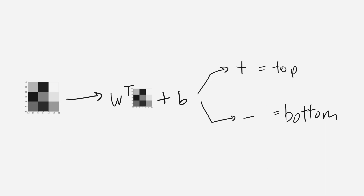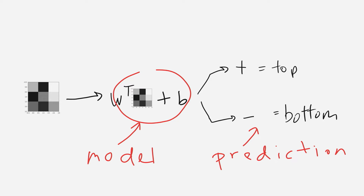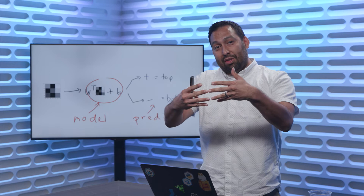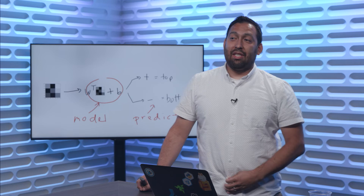Turns out that W array that you all just invented is a machine learning model. I want you to drink this in because it's fairly surprising. You're giving it a nine-square image, doing that little operation where you multiply the numbers together and add them — called the dot product — add the bias, and if it's positive you guess top, if it's negative you guess bottom. Those nine numbers plus a bias — ten total — is a machine learning model.